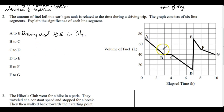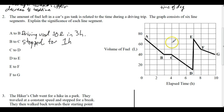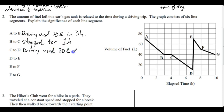From B to C, the volume hasn't changed, so it looks like we stopped for an hour. From C to D, we're back on the road again. We've gone from 40 liters down to 10 liters, and we did that in three hours. So driving used 30 liters in three hours.